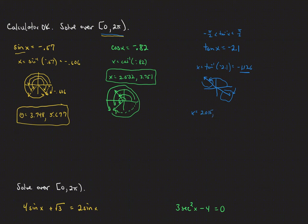For the positive quadrant 4 angle, we add 2 pi to the negative 1.126, giving approximately 5.157. So our quadrant 2 and quadrant 4 angles are approximately 2.015 and 5.157.